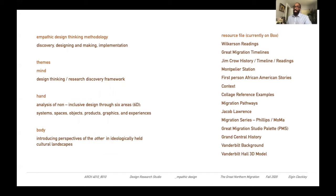We'll focus on the Sympathic Design Thinking methodology of discovery, designing and making, and implementation throughout the semester. We'll also focus on three themes — the idea of the mind, design thinking, and imagining the design thinking of Jim Crow. We'll look at Montpelier Station, for instance, and analyze through my idea of 6D, looking at spaces, systems, objects, products, graphics, and experiences.